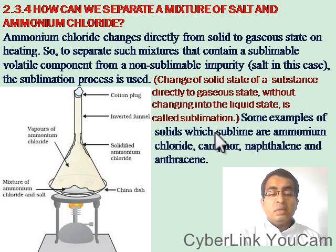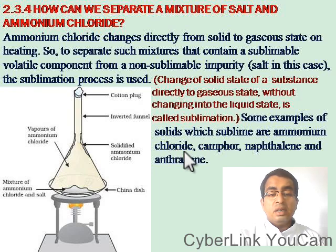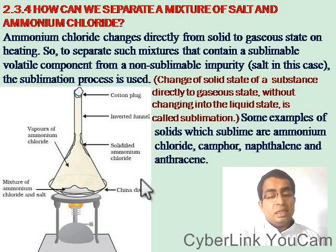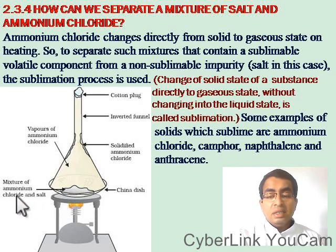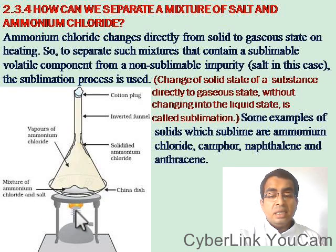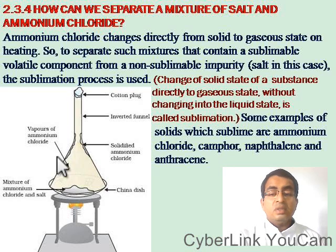Some examples of solids which undergo sublimation are ammonium chloride, camphor, naphthalene, and anthracene. In this activity, the mixture of ammonium chloride and salt is taken in a china dish. On heating, we get the vapors of ammonium chloride, which can then be collected separately.